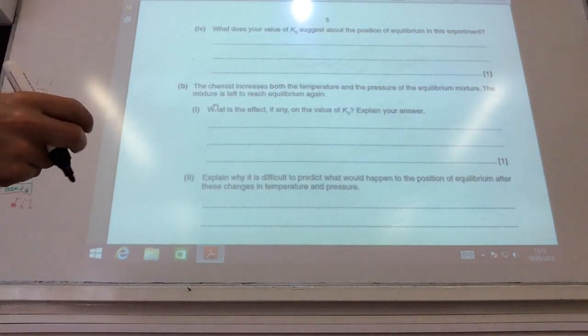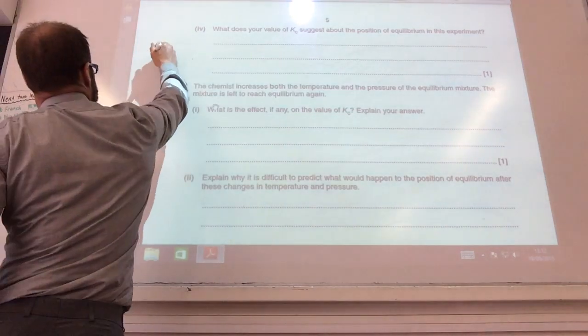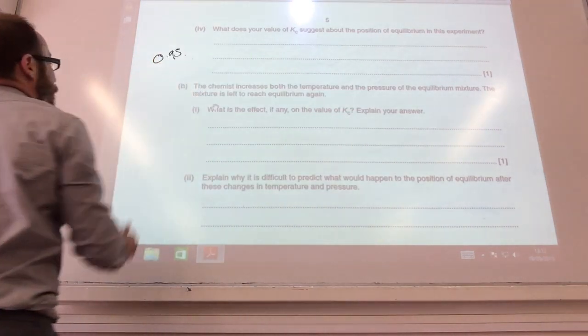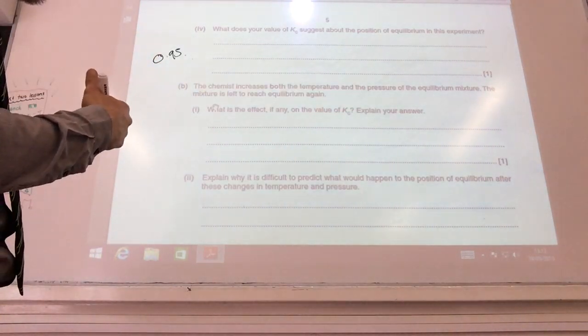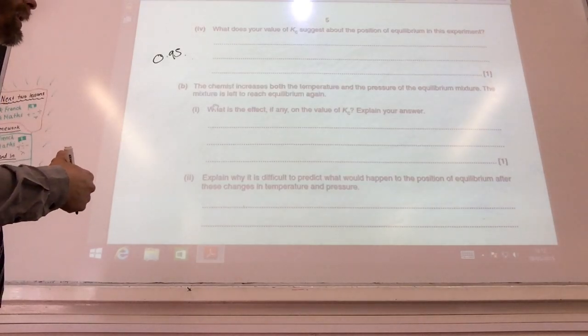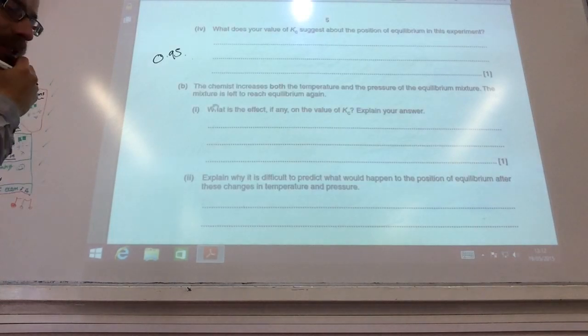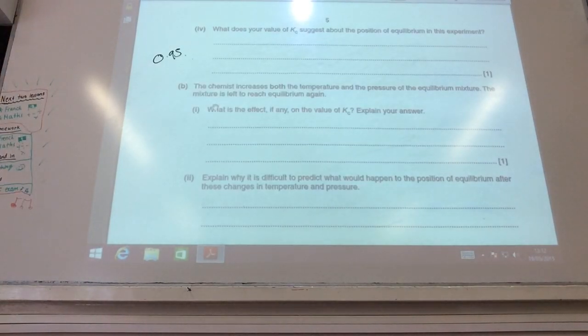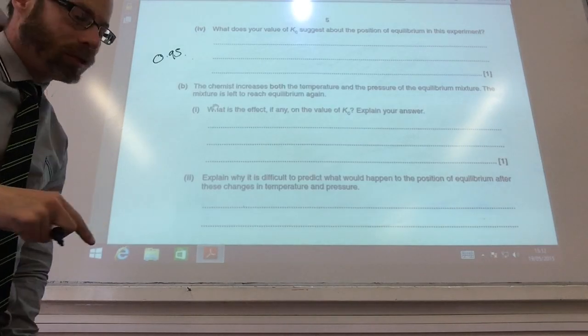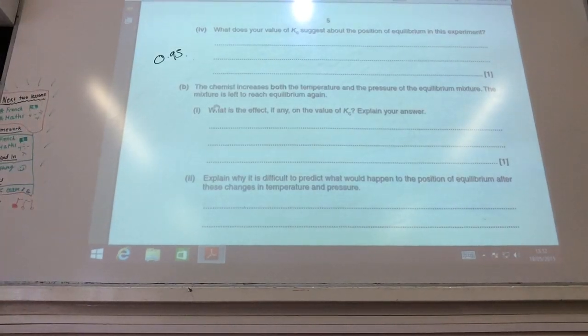What does that value suggest? Just in case you lost it, we got it to be 0.95. It suggests it's on the left hand side because it's less than one, which means I've got more reactants than products.